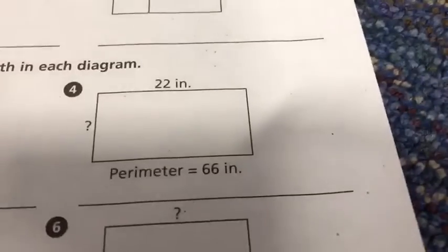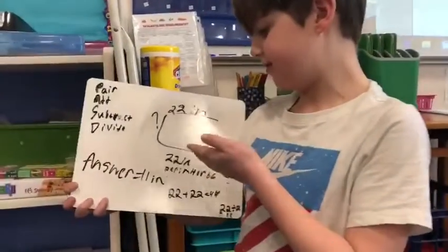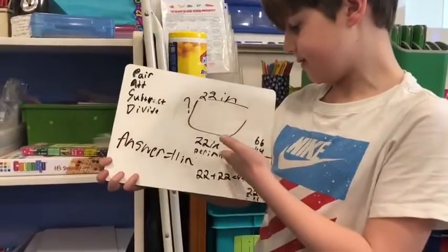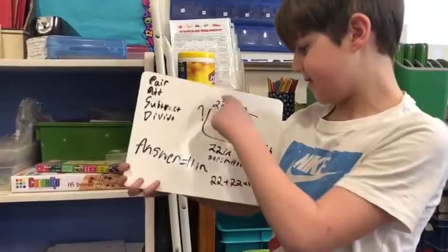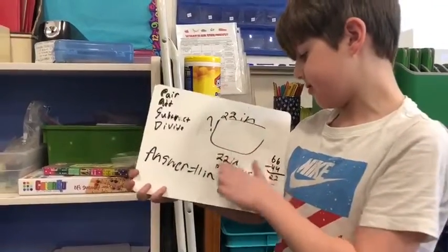So I see the 22, and I see there's a perimeter, so we're going to be doing past. I see the pair, and then I add a 22.